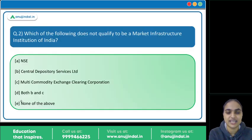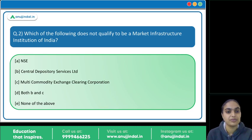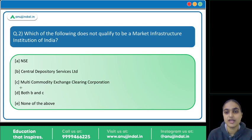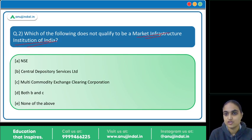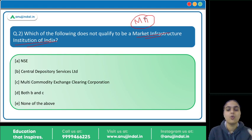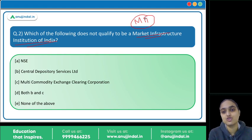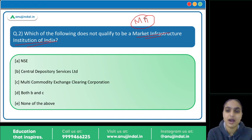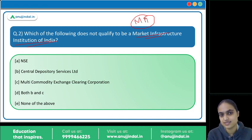Now coming to the second question: which of the following does not qualify to be a Market Infrastructure Institution of India? MII — Market Infrastructure Institutions — is an important term. Which institutions in India are classified as Market Infrastructure Institutions? Let's discuss that first, then we'll come back to the question.